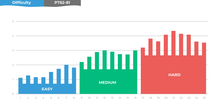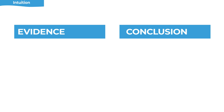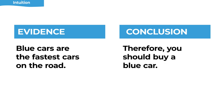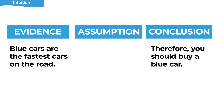In the first third of the section, the way you think about questions should be driven primarily by intuition — you shouldn't overanalyze. You can use what you know about the real world, and that information will be helpful in countering an argument or rebutting a position. For example, consider this argument: blue cars are the fastest cars on the road, therefore you should buy a blue car. That argument rests on an assumption — it's not guaranteed that you should buy a blue car just because blue cars are the fastest.